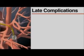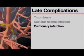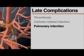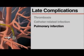Late complications include thrombosis, catheter-related infection, and pulmonary infarction. To reduce the risk of pulmonary infarction, ensure the catheter tip is in a position where full balloon inflation is required to measure a wedge pressure, and be sure to deflate the balloon after measurements of the wedge pressure have been completed.